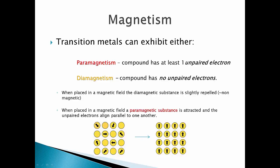Regarding magnetism: transition metals can exhibit paramagnetism when they have at least one unpaired electron, or diamagnetism when they have no unpaired electrons. In a magnetic field, diamagnetic compounds are slightly repelled because there are no unpaired electrons. Paramagnetic compounds are attracted to the magnetic field and the unpaired electrons align parallel — this is the basis of NMR (nuclear magnetic resonance spectroscopy).